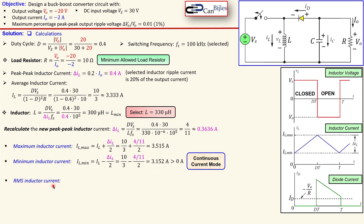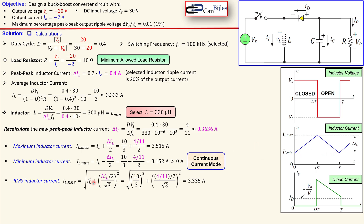We also check the RMS inductor current, which is important for the rating of the inductor when selecting it in practice. Using the RMS formula for a triangle wave — including the average IL of 3.33 amps and the peak-peak inductor current divided by two and by the square root of three — we get approximately 3.34 amps, which is slightly larger than the average inductor current.